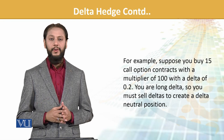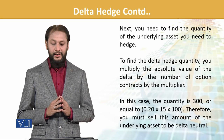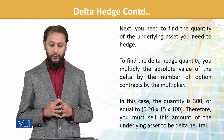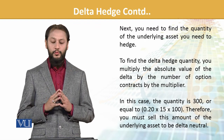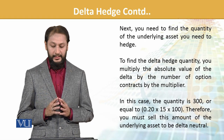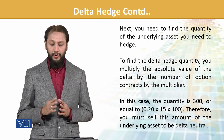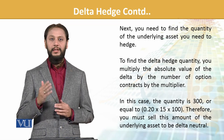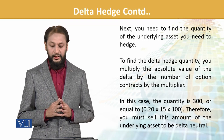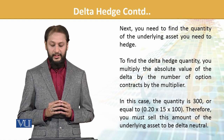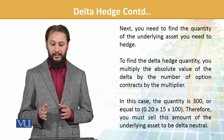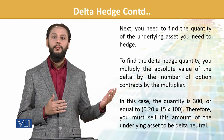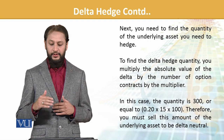Then we see the movement in it. Next, you need to find the quantity of underlying asset you need to hedge. To find the delta hedge quantity, you multiply the absolute value of the delta number by the multiplier. So the quantity is 300 — how we come up to that: 0.2 is the delta, into 15 number of contracts, times 100. Therefore, you must sell 300 shares of the underlying to be delta neutral.